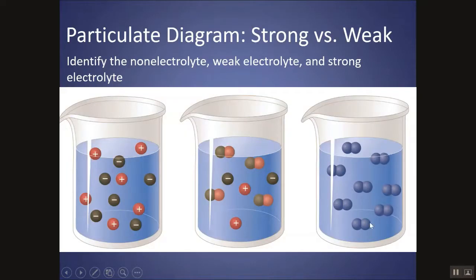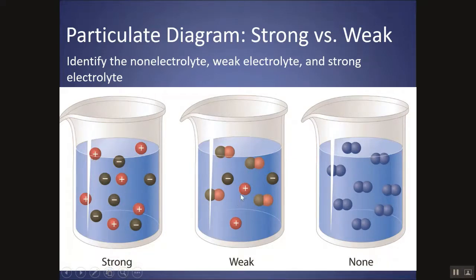Okay, so be able to pick out a particle diagram. This would be the strong electrolyte because it's 100% all found as ions. This would be a weak electrolyte because there are both molecules and ions present, and this would be a non-electrolyte. There are no ions present.